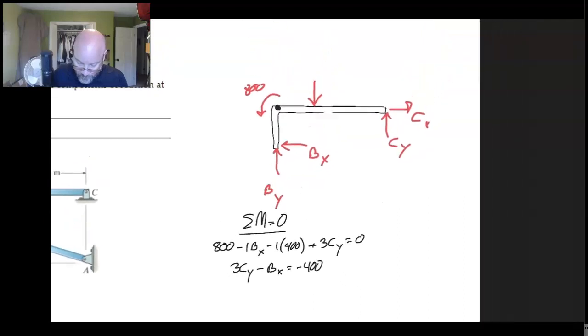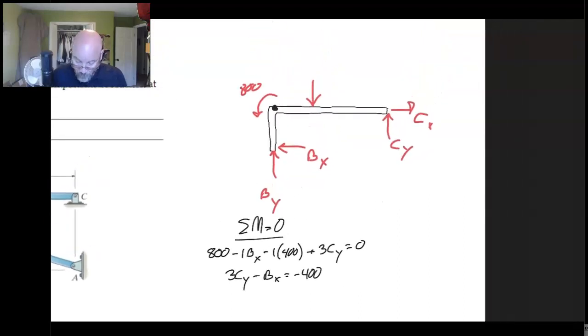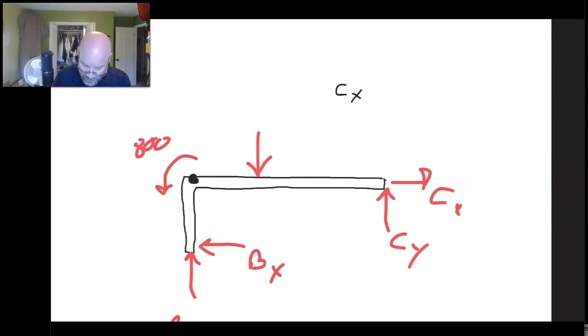Let me zoom out. We can see also if we think about what's happening horizontally, we know that CX has to be equal to BX. And that comes from thinking about the horizontal forces.